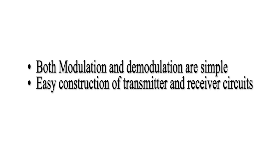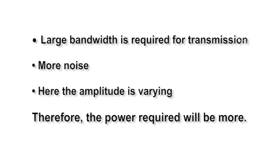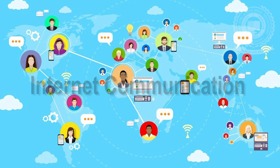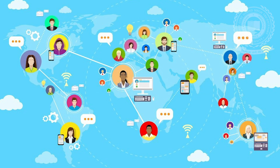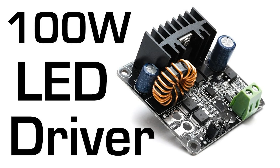Advantages of pulse amplitude modulation: both modulation and demodulation are simple, and there is easy construction of transmitter and receiver circuits. Disadvantages: large bandwidth is required for transmission, more noise, and since the amplitude is varying, the power required will be more. Applications: it is mainly used in internet communication, many microcontrollers use this technique to generate control signals, it is used in photobiology, and it acts as an electronic driver for LED circuits.